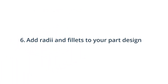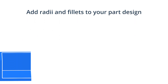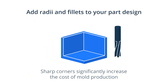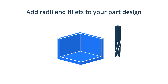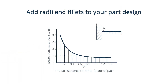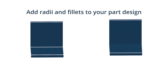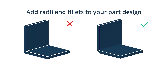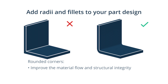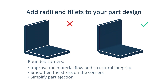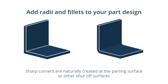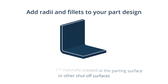6. Add radii and fillets to your part design. Since moulds are CNC machined out of either aluminium or steel, sharp internal corners are difficult to create and significantly increase the cost of mould production. In addition, sharp corners within the mould can weaken the resulting part as mould and plastic is forced to flow across or fill in a sharp corner. That's why we recommend using your CAD system's filleting tool to add a fillet and create smooth transitions between the walls and features of your parts. It will improve the material flow, the part's structural integrity, distribute the stress on the corner and simplify part ejection. The only place on your parts where sharp corners are naturally created is at the parting surface or other shut-off surfaces.